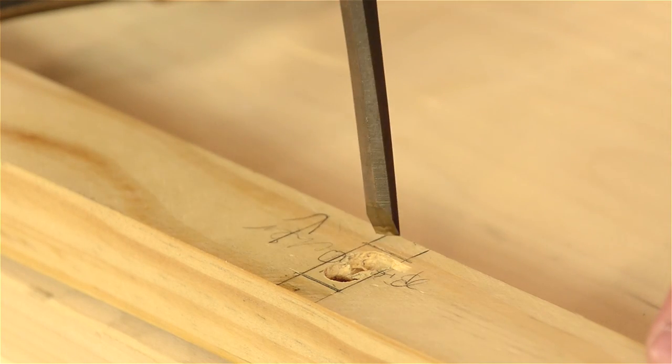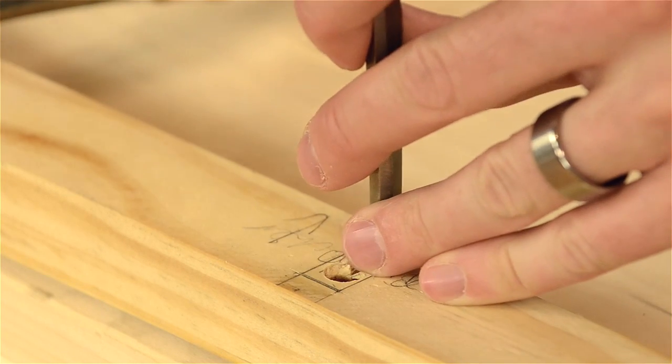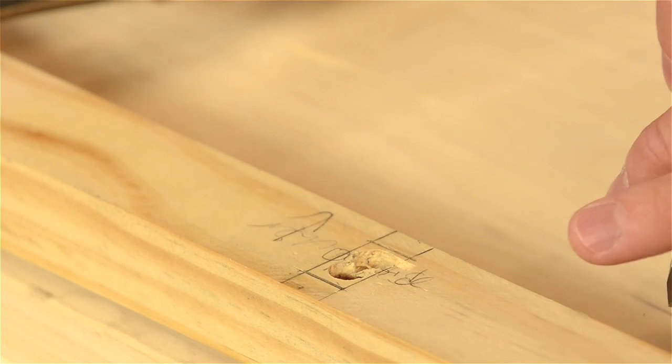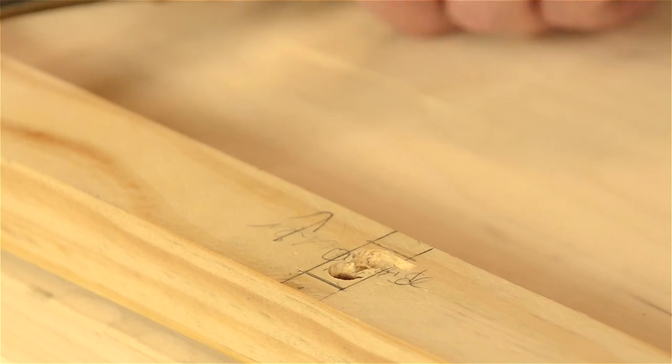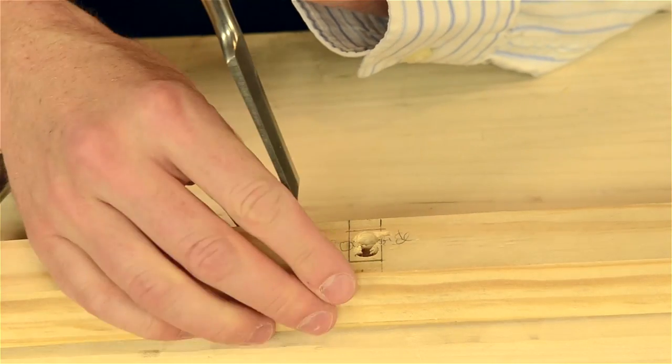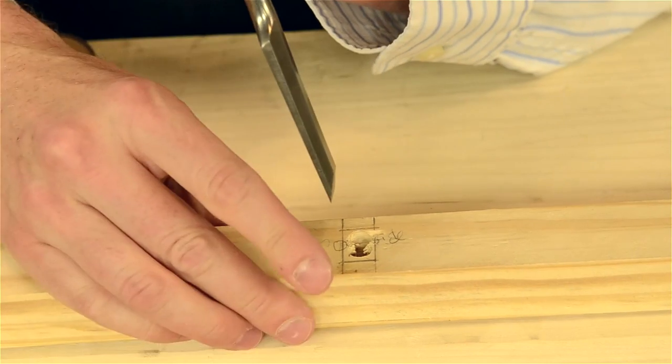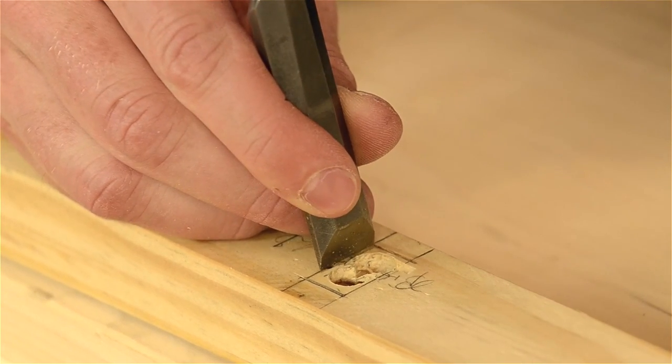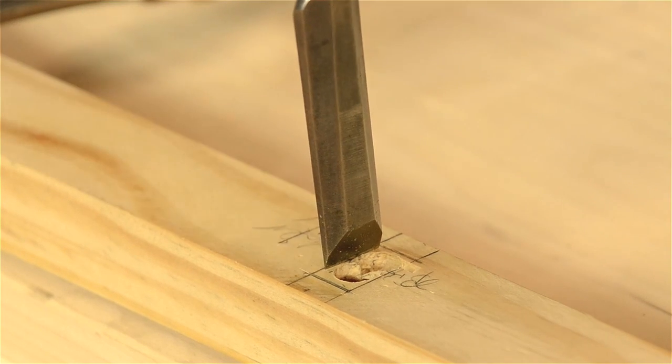I would advise against starting off here because you can see the grain is running this way. If you go in here and pound down with a mallet, the grain is just going to split, just like when you split a log at your wood pile. So I would start on this line here.